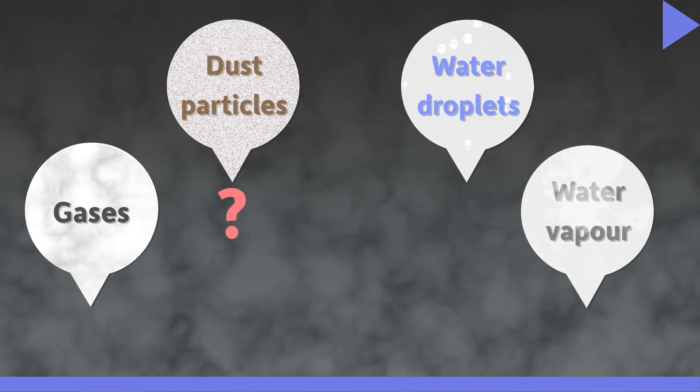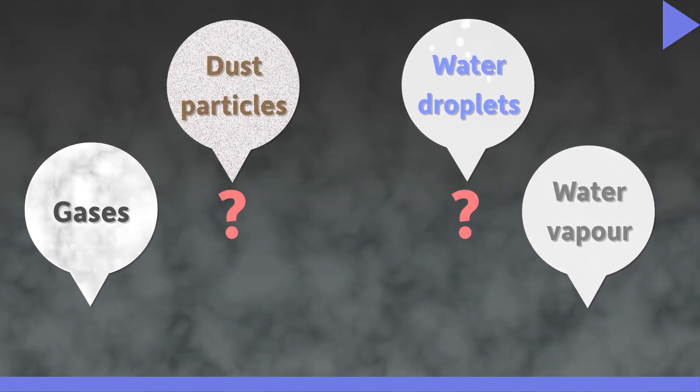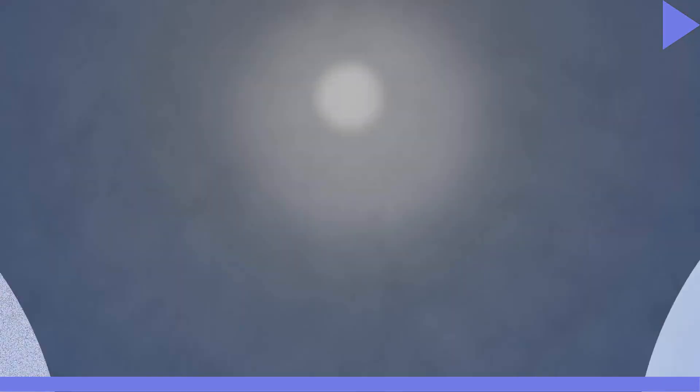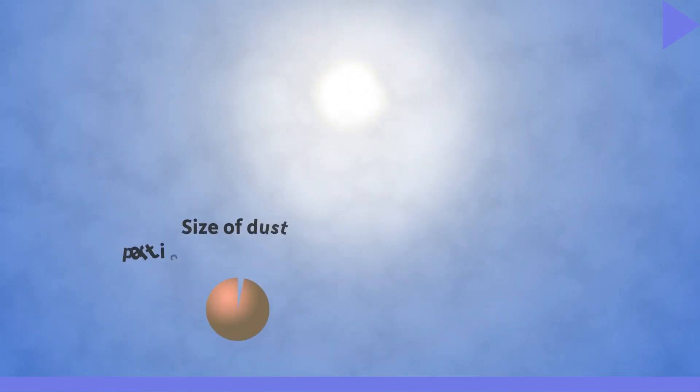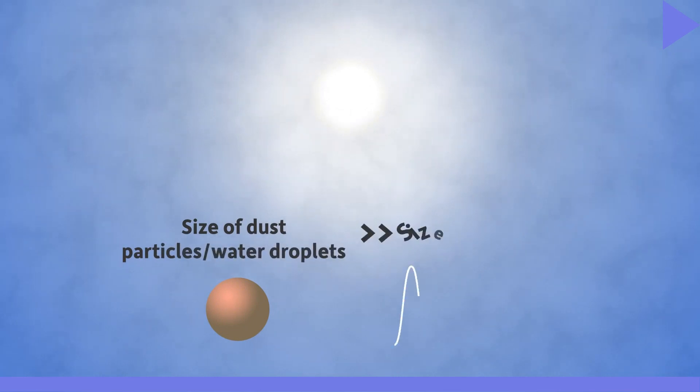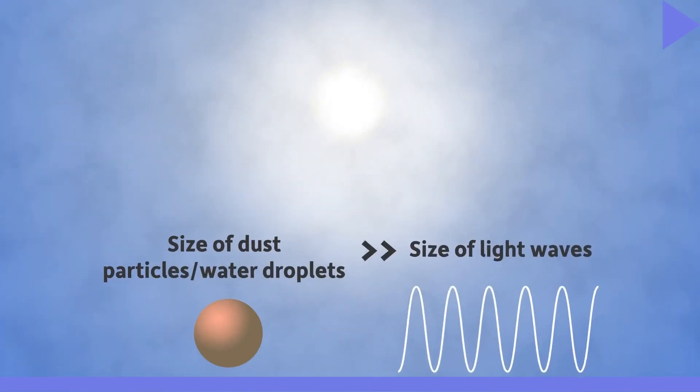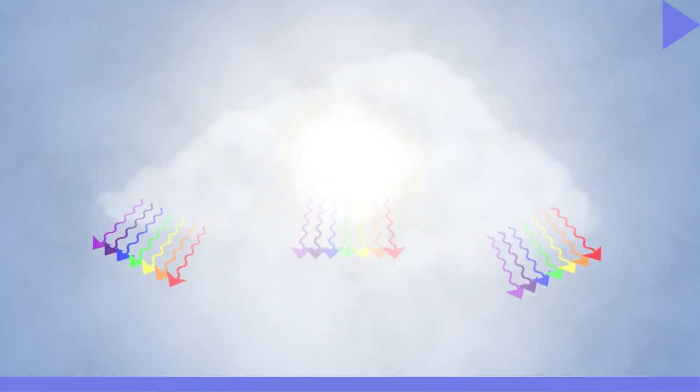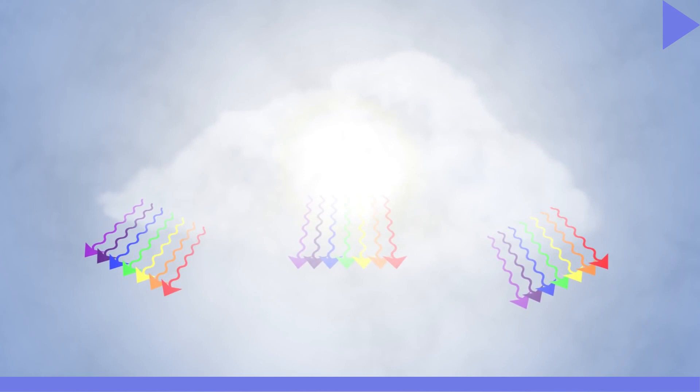Do dust particles and water droplets also scatter light? Yes, they do. However, their size is comparatively much bigger than the size of the light waves, and hence they scatter all the colours of light in equal amounts. So the white light entering the cloud or dust particles emerges out as white light again. Hence the clouds appear white.